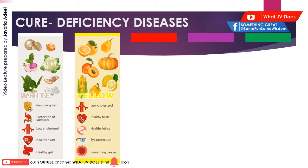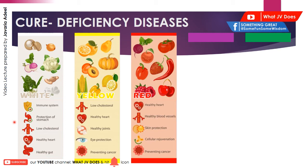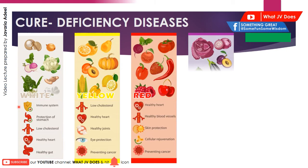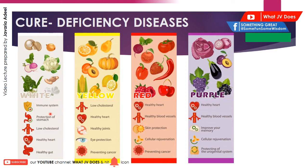The red vegetables and fruits are good for healthy heart, healthy blood vessels, skin protection, and cellular rejuvenation — which means the building up of new cells — and prevention of cancer. The purple category is good for healthy heart, healthy blood vessels, it improves memory, cellular rejuvenation, and protecting of the urogenital system.